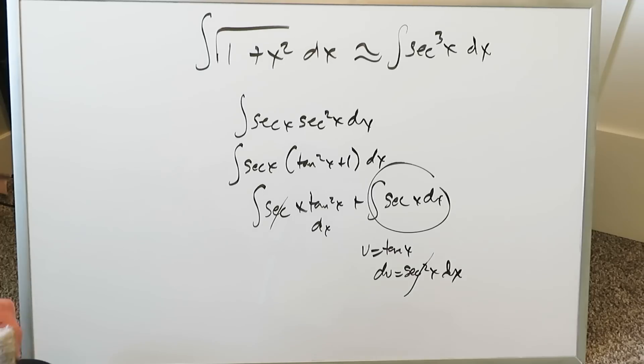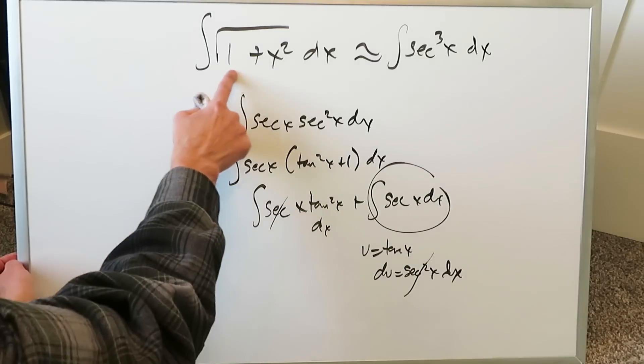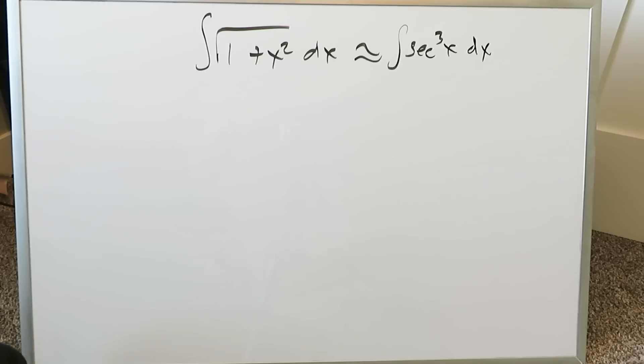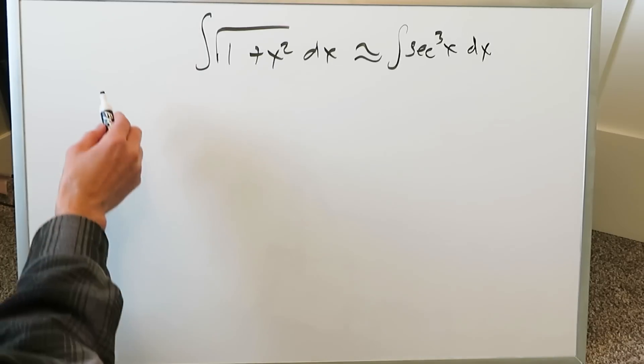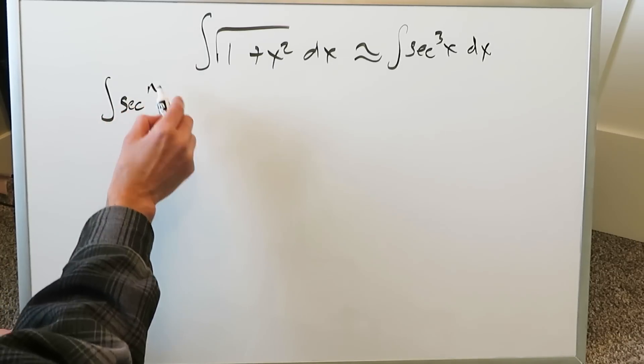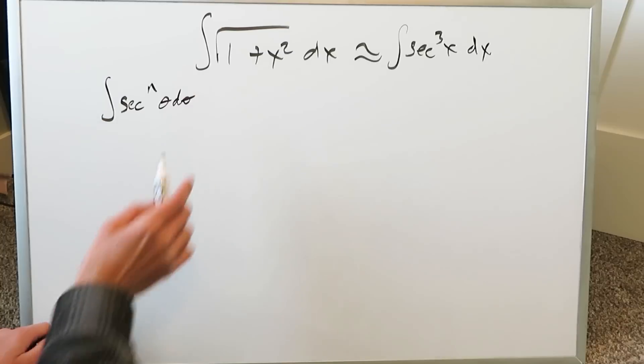So this typical trigonometric substitution route for this specific part does not work. You have to have an alternate route. That alternate route is the topic of this particular video. The alternate route is a reduction formula which you apply to an integral which has this form right here.